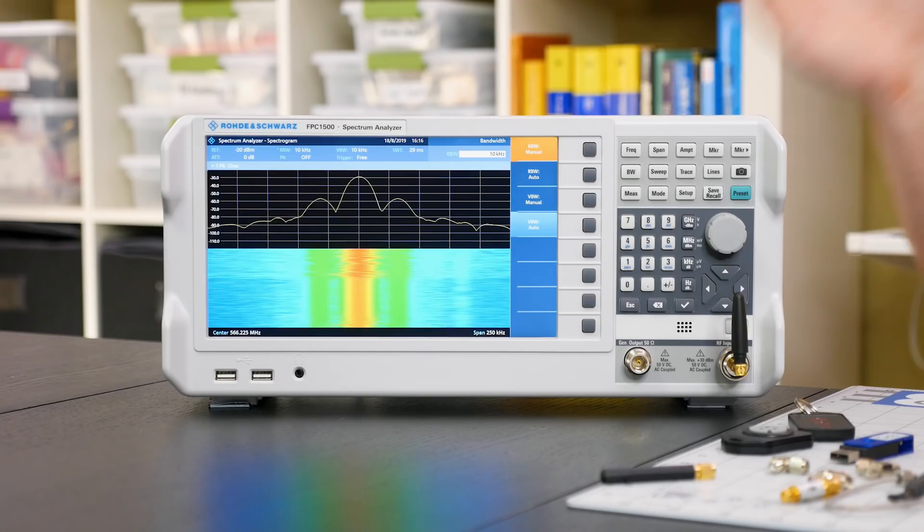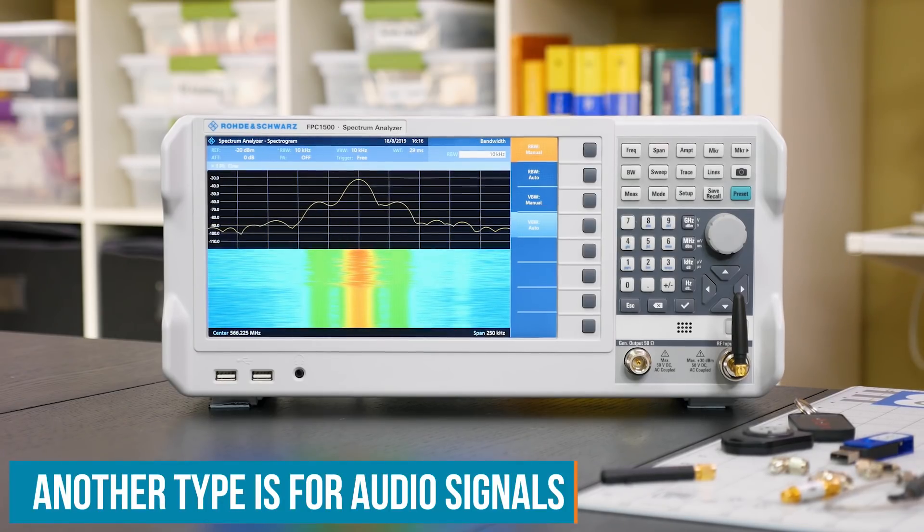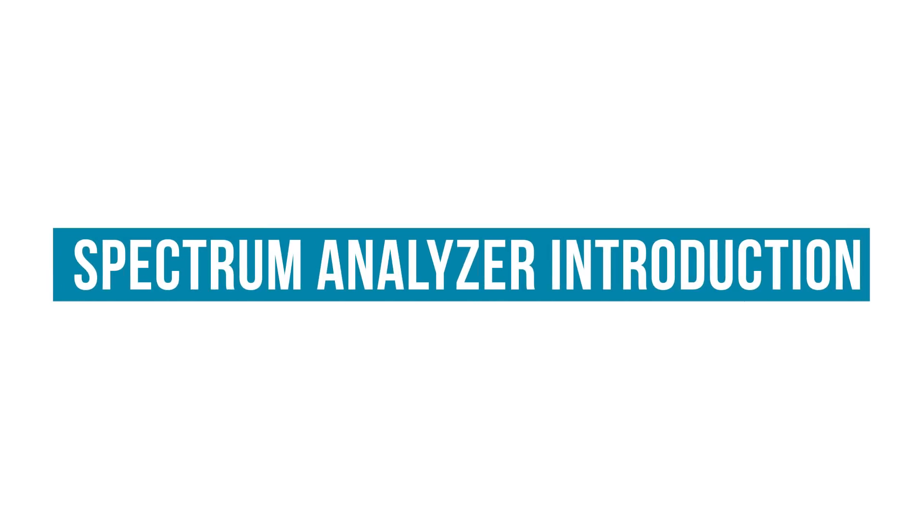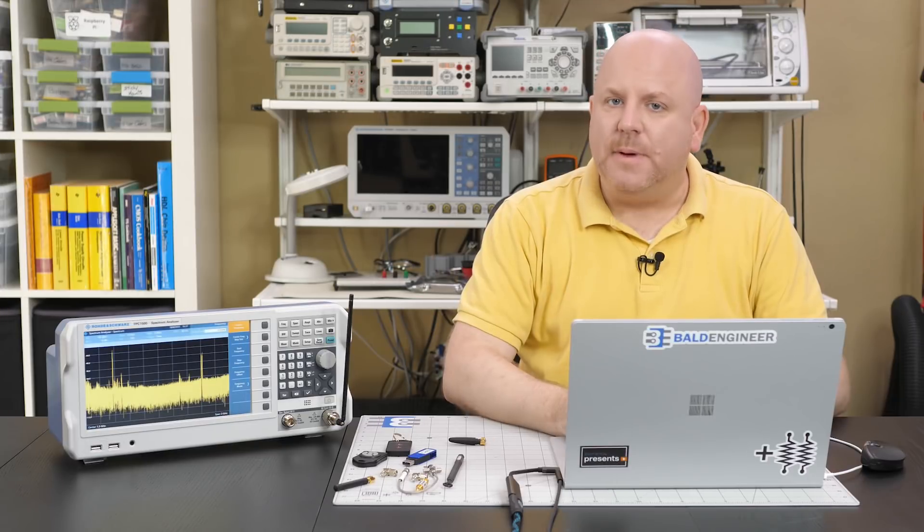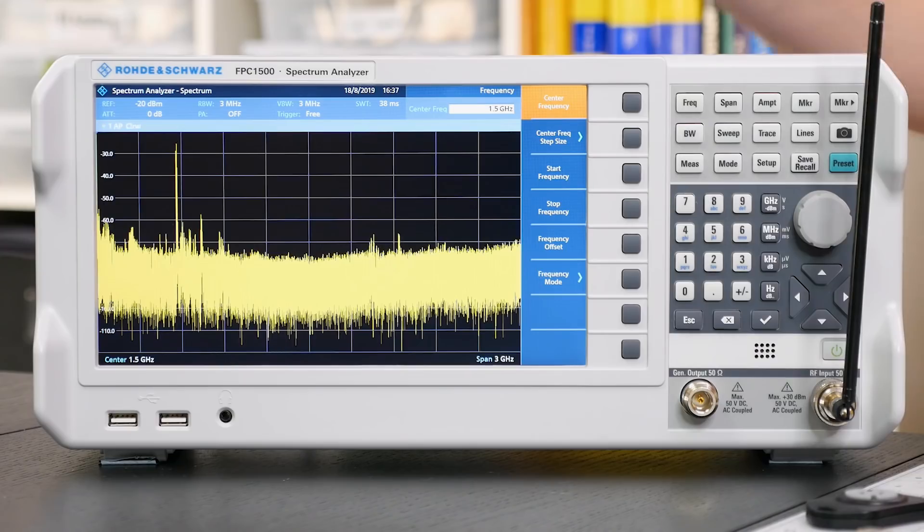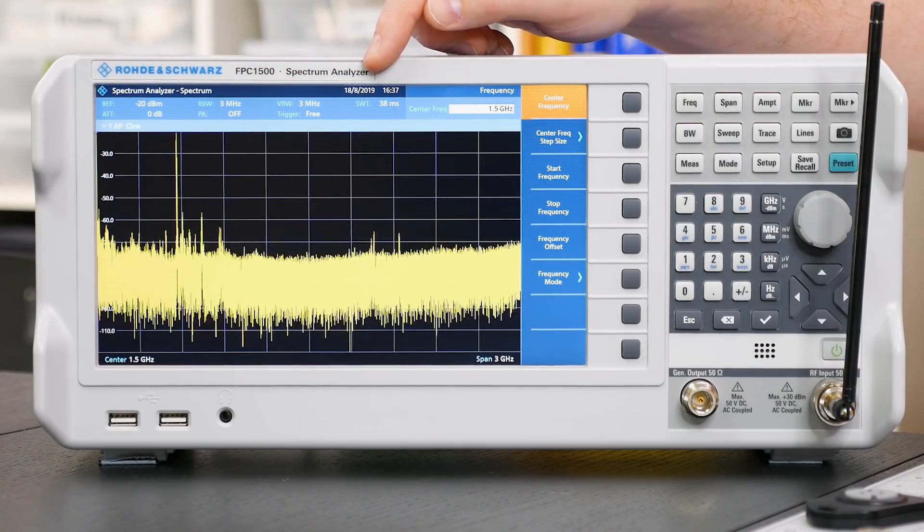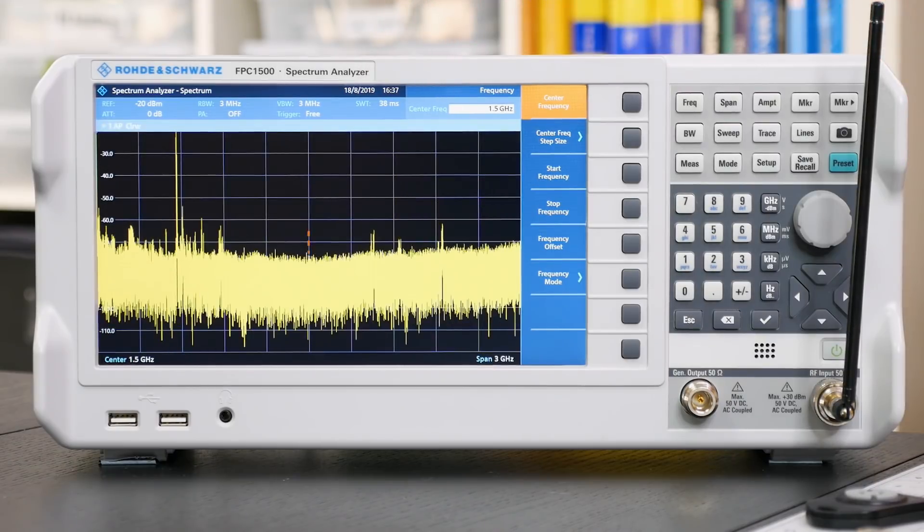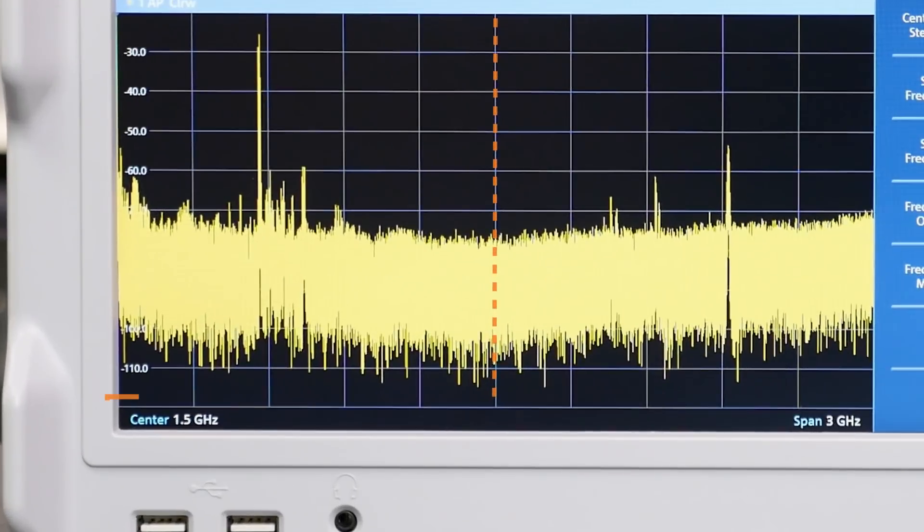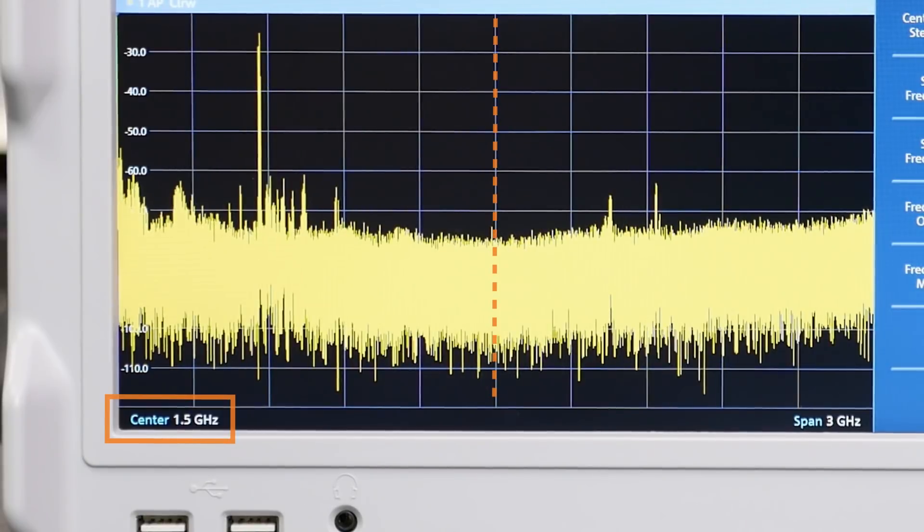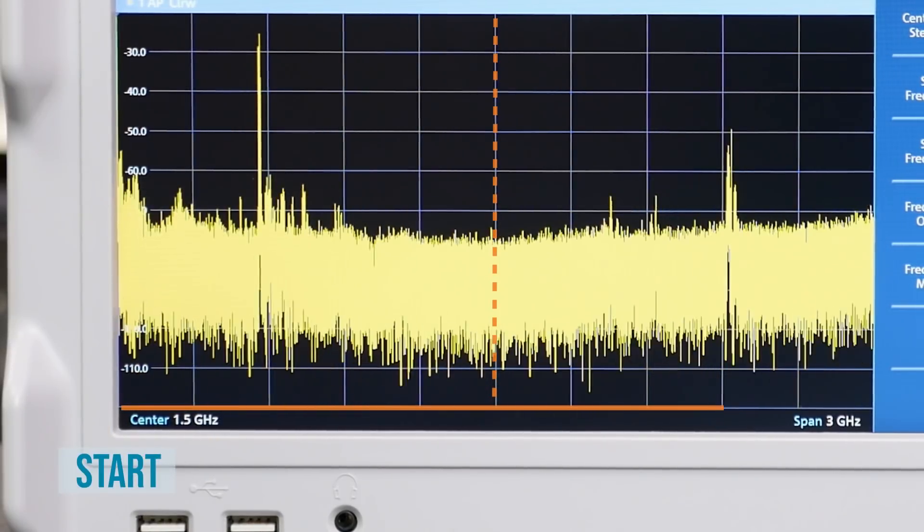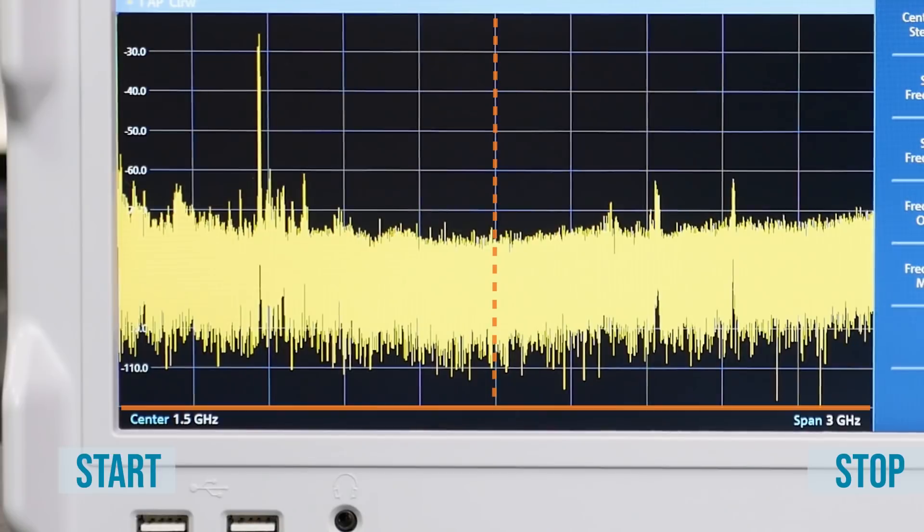When we talk about a spectrum analyzer on our workbench, we usually mean more of the radio frequency or RF type like this one. Spectrum analyzers make sweep measurements. They start at one frequency and then sweep through, measuring the power of individual frequency points. The center of the screen is the center frequency, which in this case is 1.5 GHz. The left is our start frequency and the right is the stop frequency. Between them is the span, which in this case is 3 GHz.